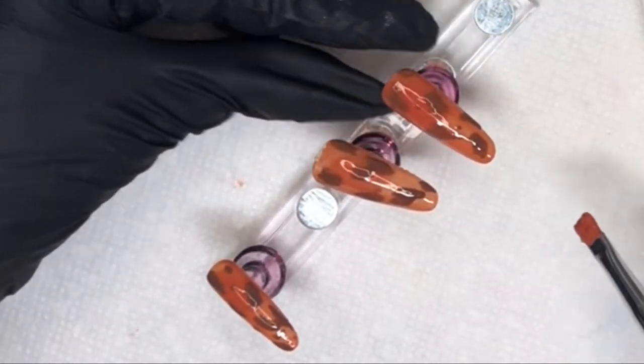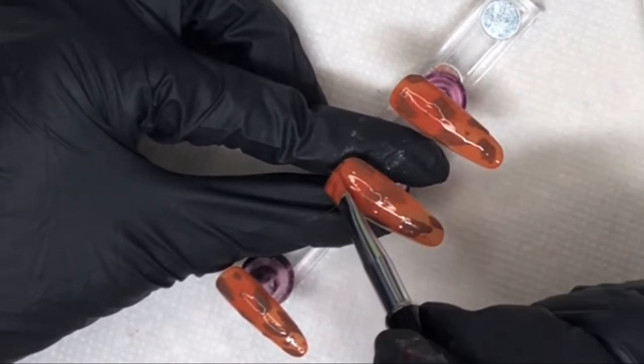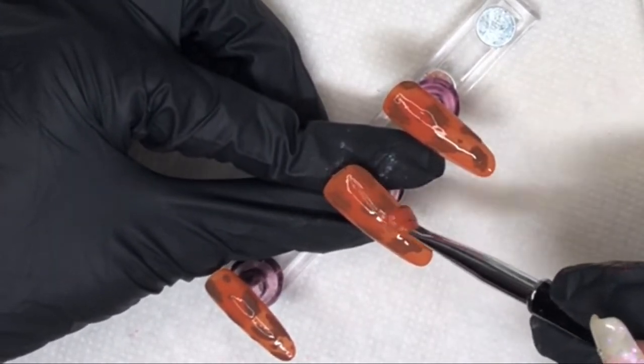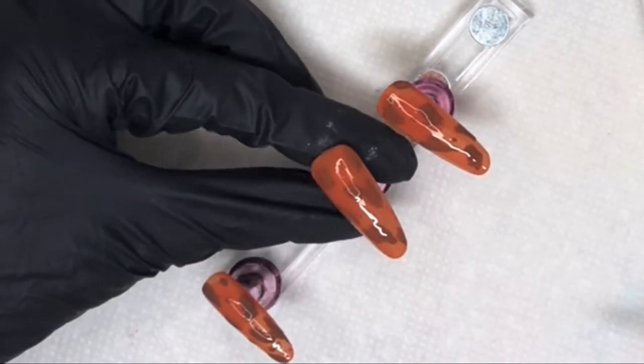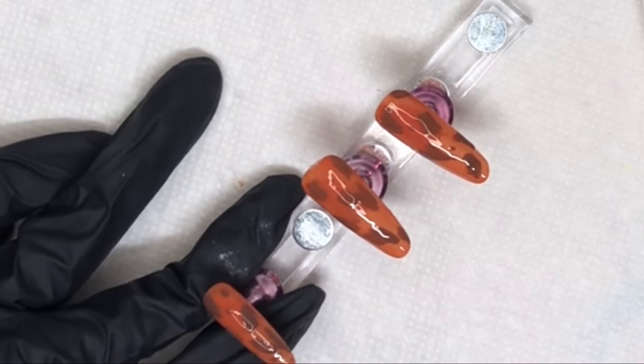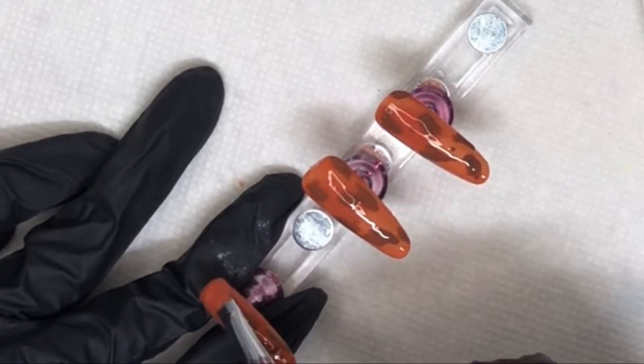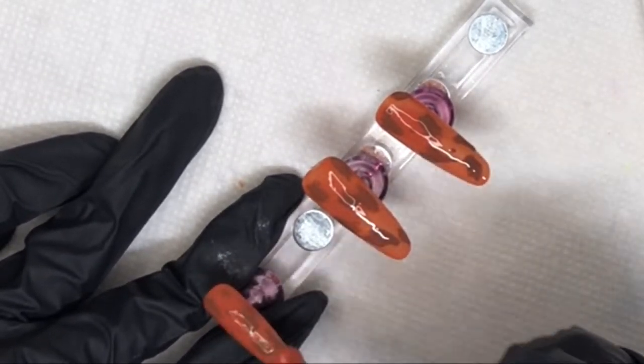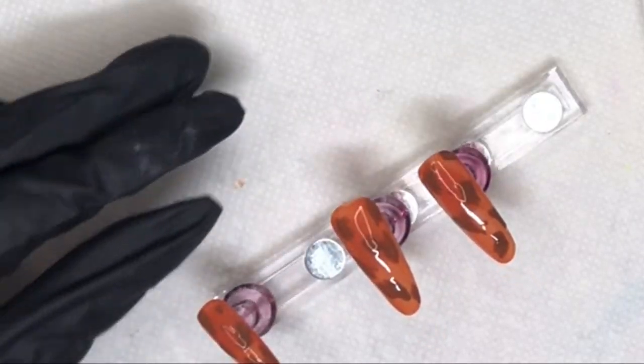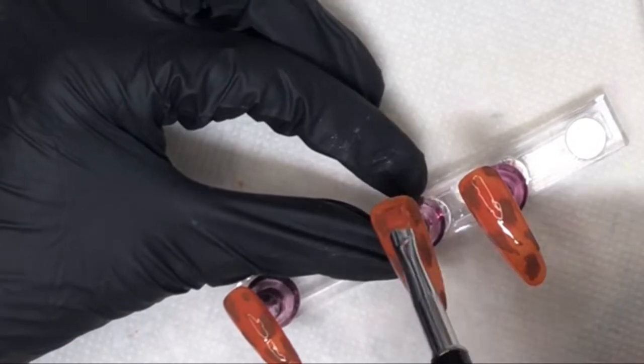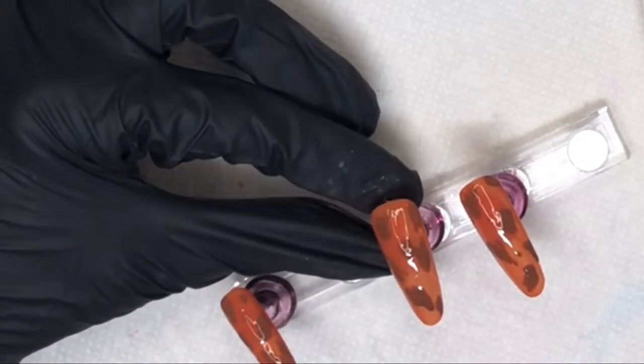Then I cured that, and we're coming back in with a third very, very, very, very thin coat. And then without curing it, what I'm going to do is come back in with that deeper color and just add a little bit to each one of the splotches so that it feels more dimensional.